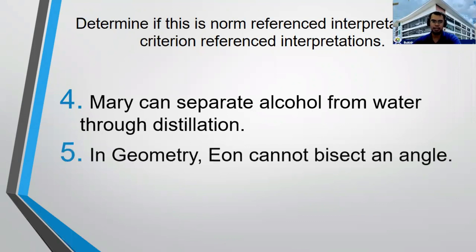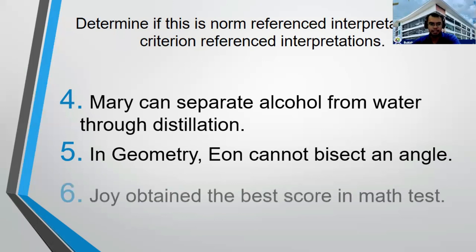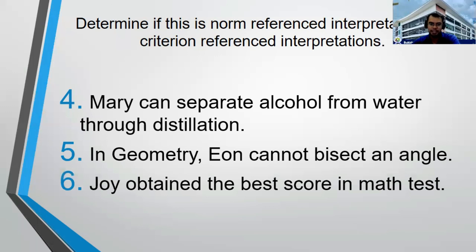Number 5: In geometry, Aeon cannot bisect an angle. The keyword is 'cannot,' meaning Aeon failed the criteria, which is to bisect an angle — so this is criterion reference interpretation. Number 6: Joy obtained the best score in the math test. The keyword is 'best,' which is a superlative degree, so this is norm reference interpretation.